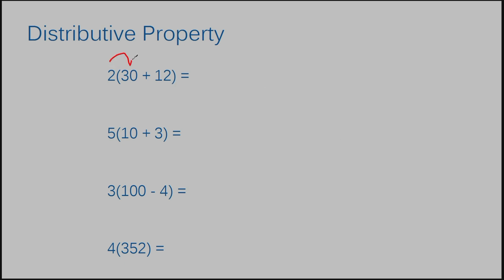The two goes to the 30, then the two goes to the 12. When you get to each number you multiply them together — two times 30 gives you 60. Then I'm going to add, because there's an addition sign in the problem. Two times 12 gives me 24. 60 plus 24 is 84.